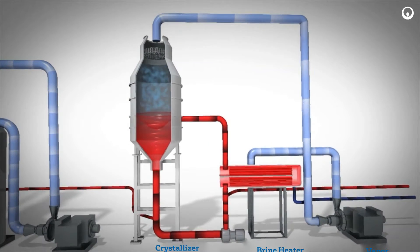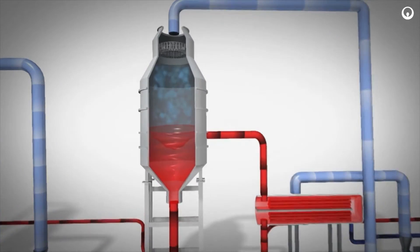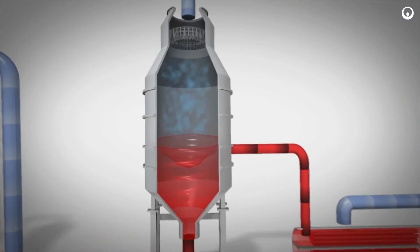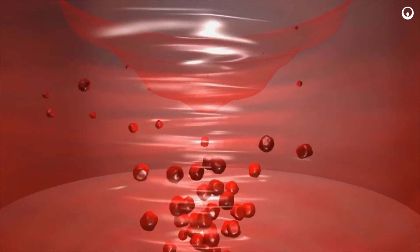Upon entering the vapor body, the heated brine flashes. When the brine flashes, water evaporates as steam vapor. This concentrates the brine and crystals form in the circulating brine.